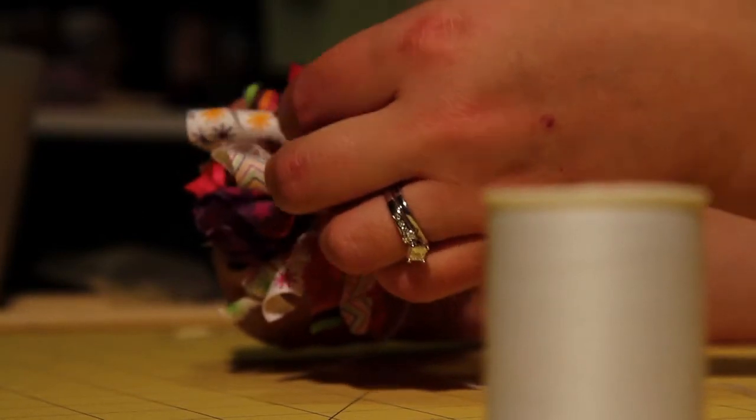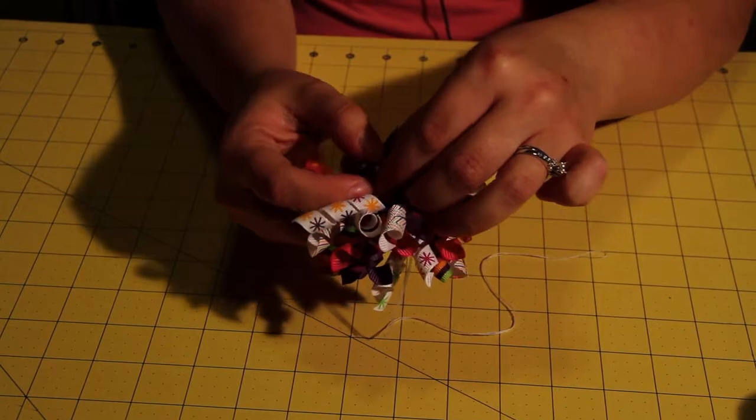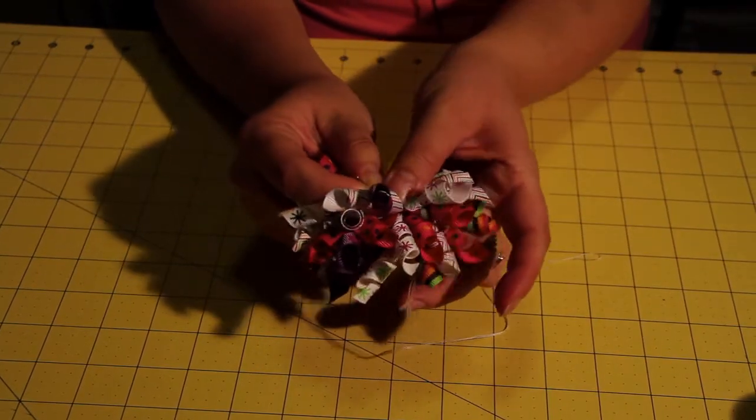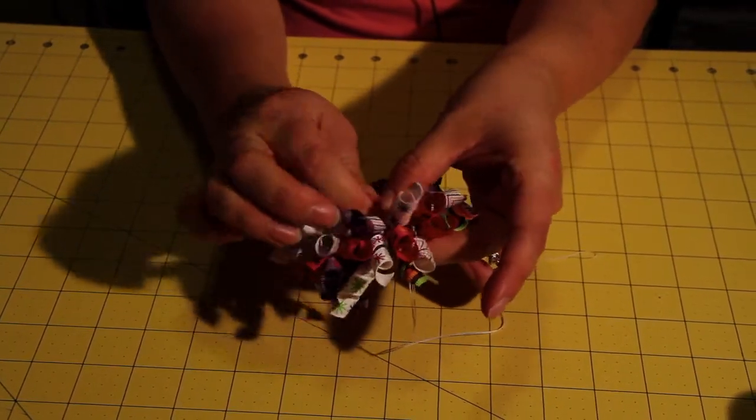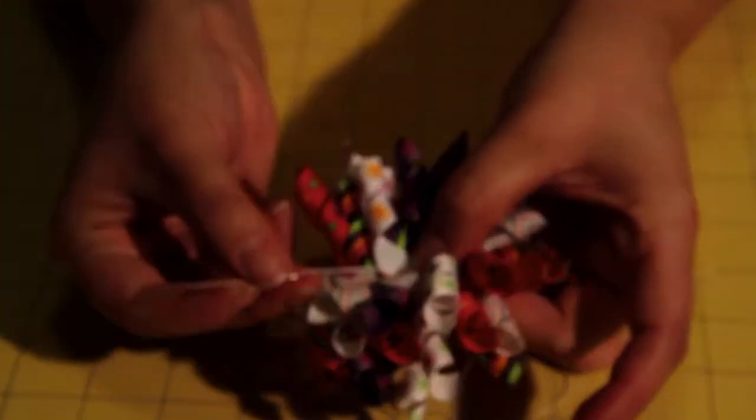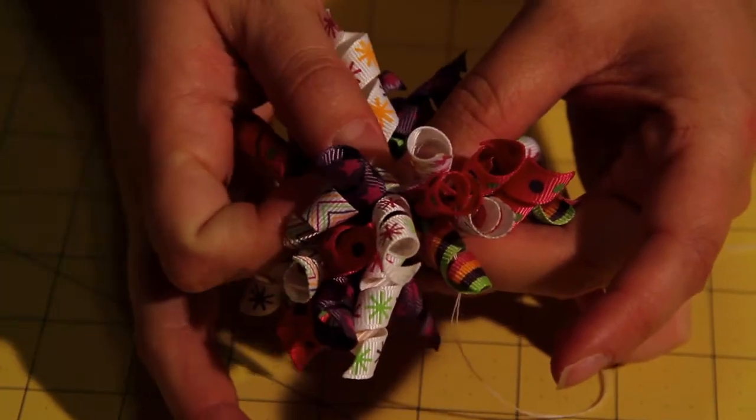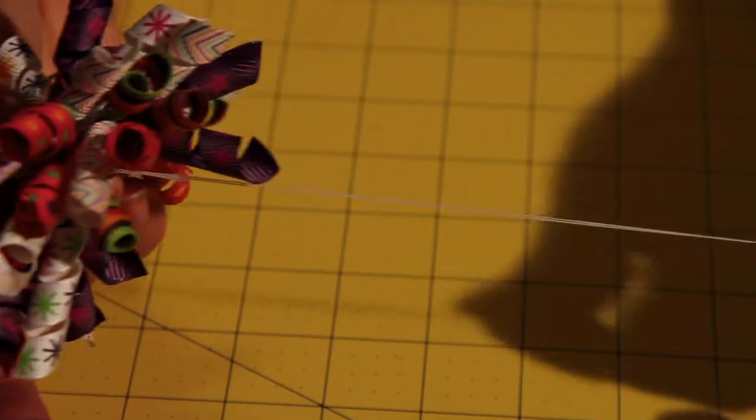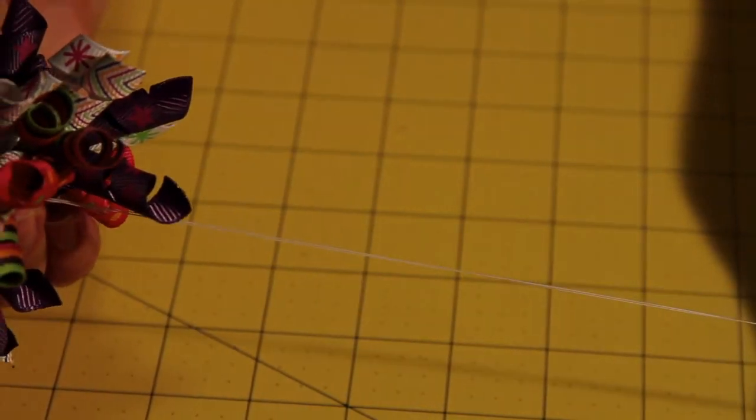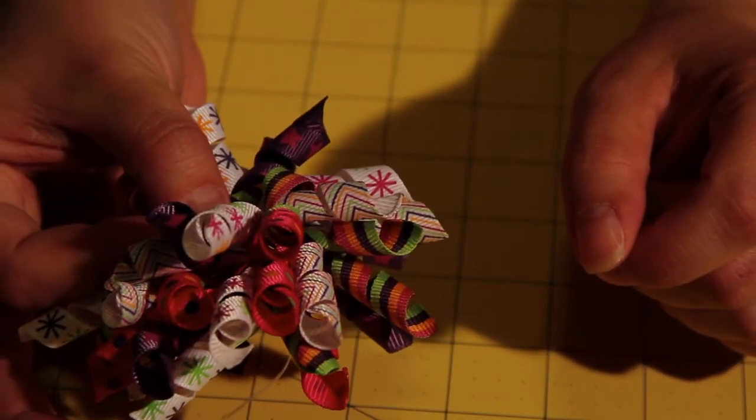So once you have your last piece of ribbon on, you are now going to thread it through just a little bit. Like this. Making sure that you still have quite a bit of thread underneath. That way your ribbon won't fall off the thread.